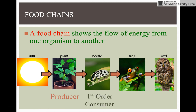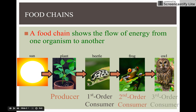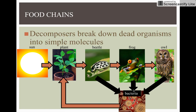The producer feeds the first order consumer, the ladybug. The second order consumer is the frog, and the third order consumer is the owl — the last one to eat the second order consumer. Decomposers break down dead organisms into simple molecules. So when anything dies — the plant, the beetle, the frog, the owl, any living organism — bacteria eats it, and the cycle begins again.